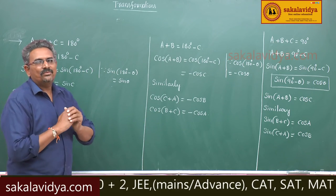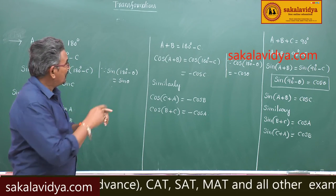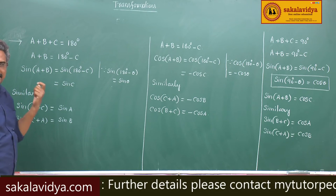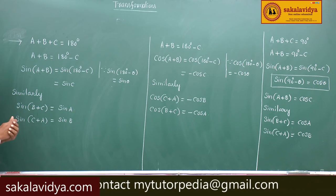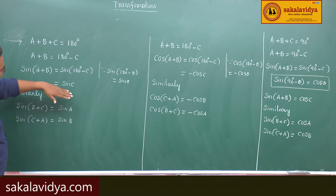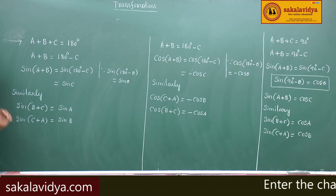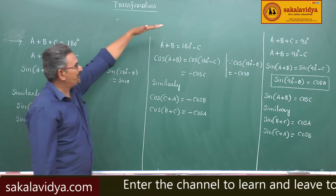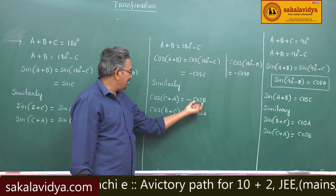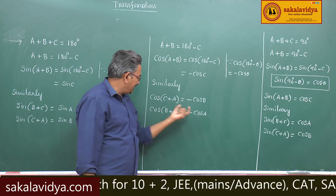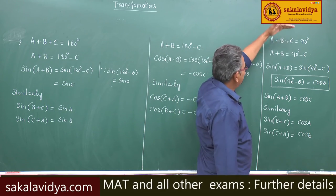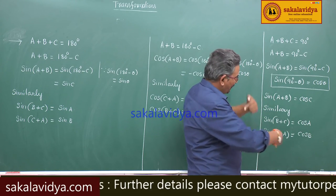Now, if a+b+c = 180 degrees, we can replace: sin(c) with sin(a+b), sin(a) with sin(b+c), sin(b) with sin(c+a). Similarly, cos(c) can be replaced by minus cos(a+b), cos(b) by minus cos(c+a), and cos(a) by minus cos(b+c). The converse is also true for the condition a+b+c = 90 degrees.